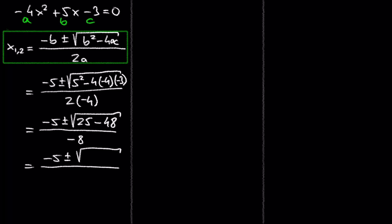25 minus 48 is negative 23, and the square root of negative 23 is i times the square root of 23.